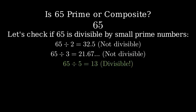Now let's try 5. 65 divided by 5 equals 13 exactly. We found our first factor. Let's create a factor tree to show this division. 65 can be divided by 5, giving us 13.